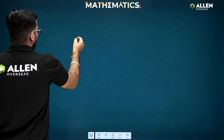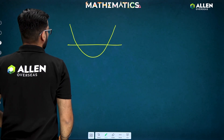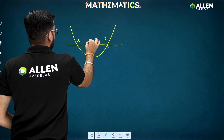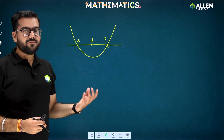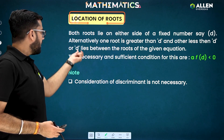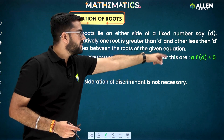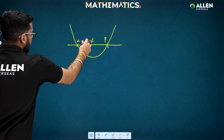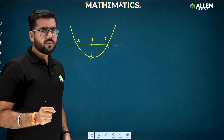Alternatively, one root is greater than d and the other is less than d. So we make a graph where alpha and beta are two roots, and between them we have one number d. This is the condition: d lies between the roots of the given equation. The necessary and sufficient condition is a·f(d) < 0, because at d we are getting a negative value.